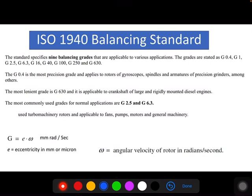For any industries, the main balancing standard used is ISO 1940 for balancing of fans, rotors, pumps, or any rotating equipment. This standard has mainly nine balancing grades that are applicable for various applications. These grades generally start from G0.4, G1, G2.5, G6.3, G16, G40, G100, G250, G630.